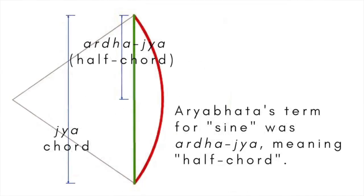The Aryabhatiya makes use of a place value system for arithmetic, gives a formula for the area of a triangle, and deals with the concept of sine, which Aryabhata calls jya, or half chord. In fact, our word sine has come about through a series of translations and mistranslations of Aryabhata's original name for the concept.